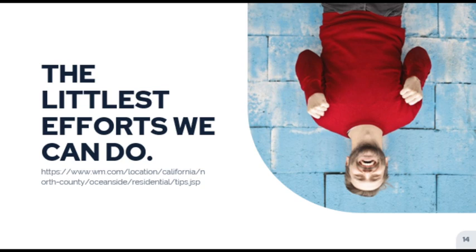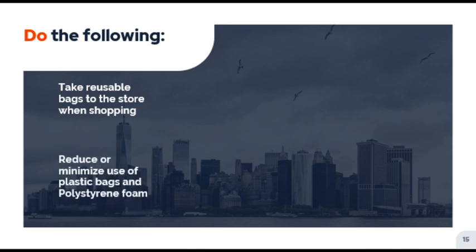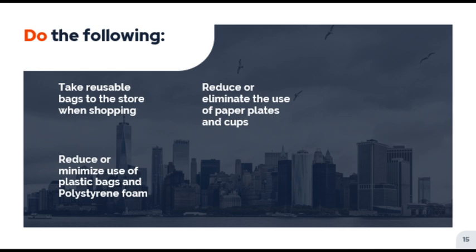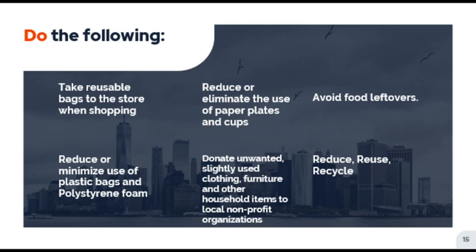What are the littlest efforts that we can do? First, take reusable bags to the store when shopping instead of using plastic cellophane to bag groceries — bring eco-friendly bags which we can reuse every time we shop. Also, reduce or minimize the use of plastic bags, polystyrene foam, and eliminate the use of paper plates and cups, as these materials take hundreds of years to completely degrade. Donate unwanted slightly used clothing, furniture, and other household items to local non-profit organizations instead of throwing them away. Avoid food leftovers. And of course, practice the three R's: reduce, reuse, and recycle.